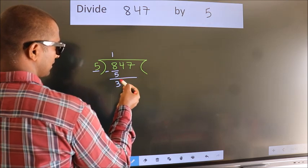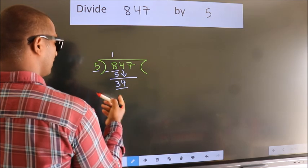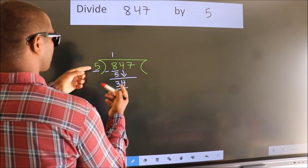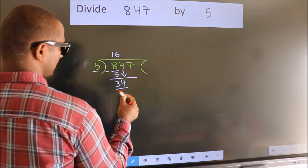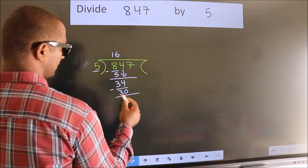After this, bring down the beside number. So, 4 down. So, 34. A number close to 34 in the 5 table is 5 times 6 equals 30. Now we subtract. We get 4.